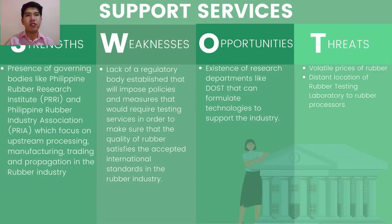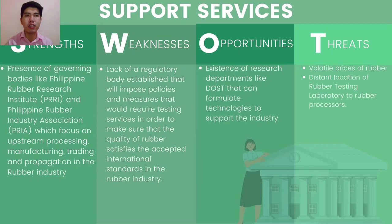For support services, strengths include the presence of governing bodies like the Philippine Rubber Research Institute and Philippine Rubber Industry Association, which focus on upstream processing, manufacturing, trading, and propagation in the rubber industry. Weaknesses include lack of a regulatory body to impose policies and testing services to ensure rubber quality meets accepted international standards. Opportunities include the existence of research departments like DOST that can formulate technologies to support the industry. Threats include volatile prices of rubber and distant testing laboratories from rubber processors.